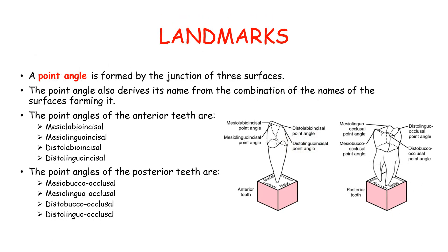A point angle is formed by the junction of three surfaces and also derives its name from the combination of the surfaces forming it. For both anterior and posterior teeth, there are four point angles. For anterior teeth: mesiolabioincisal, mesiolinguoincisal, distolabioincisal, and distolinguoincisal. For posterior teeth: mesiobuccalocclusal, mesiolinguoocclusal, distobuccalocclusal, and distolinguoocclusal.